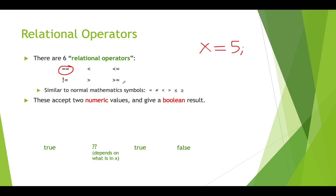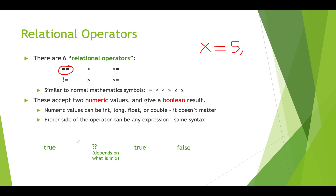All of these relational operators require that we have numeric variables on either side, and we get a boolean result. Let's look at a couple of examples. The numeric values can be any of the numerics that we're used to, and we can have a variable, a literal, or an expression on either side. Here we have two literals: 5 less than 6, and so 5 is less than 6 — this is true. The result of this expression is true.